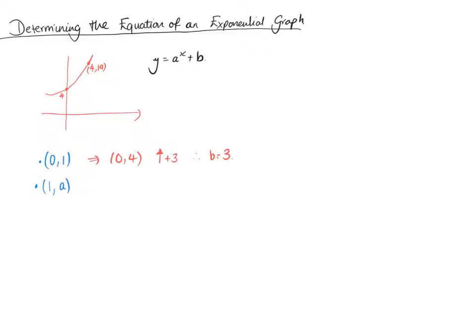So from there we can substitute in. If we use another coordinate, that gives us an x and a y value. And we know what b is, so we've only got one variable, so we can find out a.